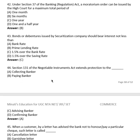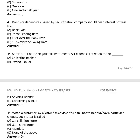Question 41: Bonds or debentures issued by a securitization company should bear interest not less than: bank rate, prime lending rate, 1.5% over bank rate, or 1.5% over the saving rate? The right answer is (C), 1.5% over bank rate.